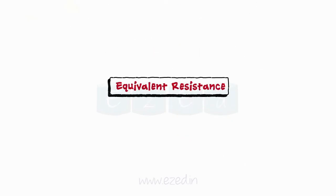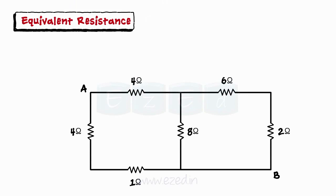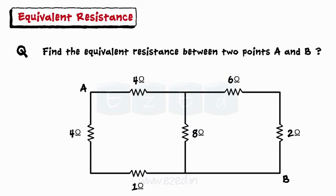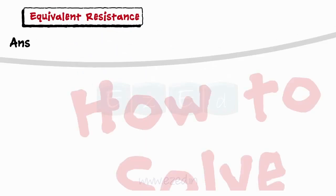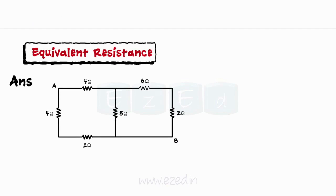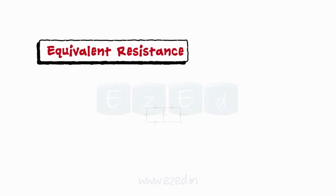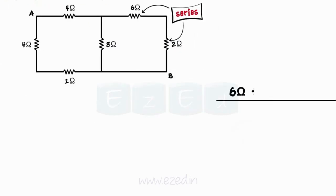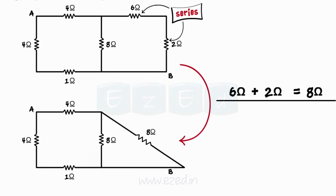Let's take an example to implement the series-parallel circuit concept: find the equivalent resistance between two points A and B. To solve it, we keep the two points as they are and simplify the network around them into a single resistor. The two resistors of 6 ohms and 2 ohms near point B form a series circuit, so we replace them by their equivalent series resistor of 8 ohms.